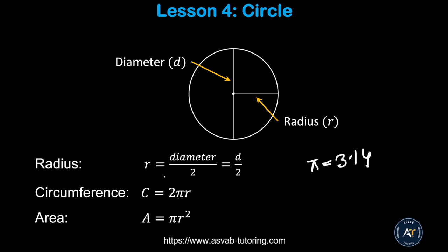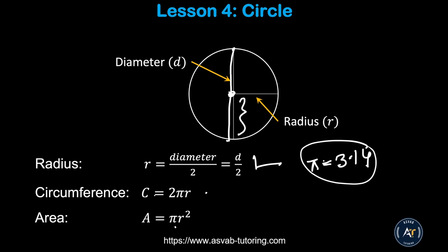Now we'll learn how to find area and circumference of a circle. The distance from one side to the other through the center is called the diameter, and half of the diameter is called the radius. So radius equals diameter divided by 2. The circumference equals 2 times pi times radius, and the area equals pi times radius squared, where pi equals 3.14.